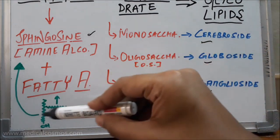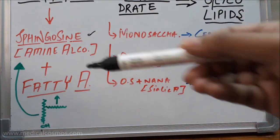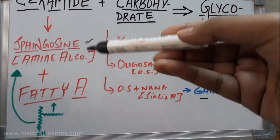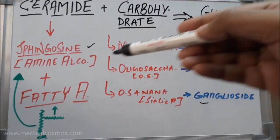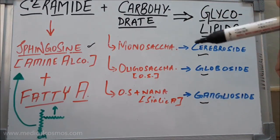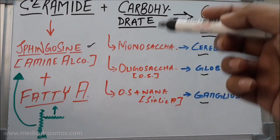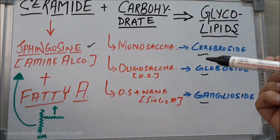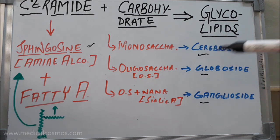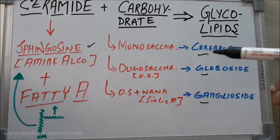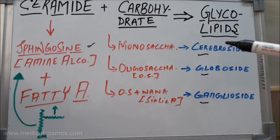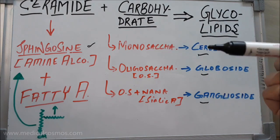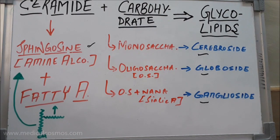Carbohydrates conjugate with the ceramide to form glycolipids. If the carbohydrate is a monosaccharide — for example glucose — it will form glucocerebroside. The term 'cerebroside' denotes the number or type of monosaccharide attached.